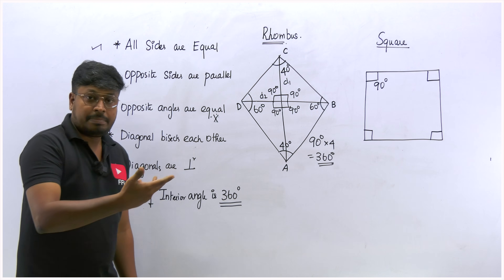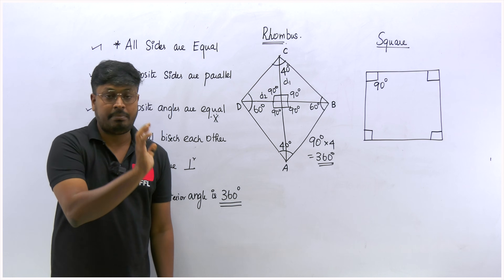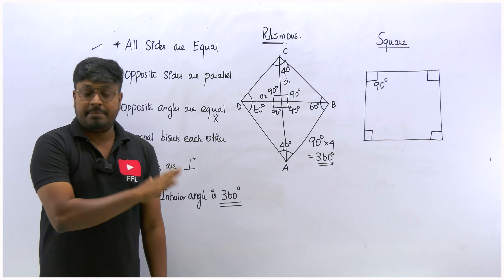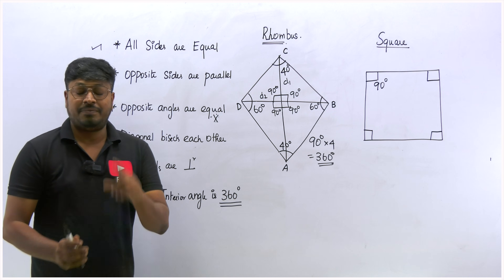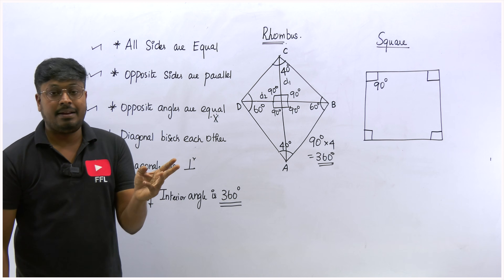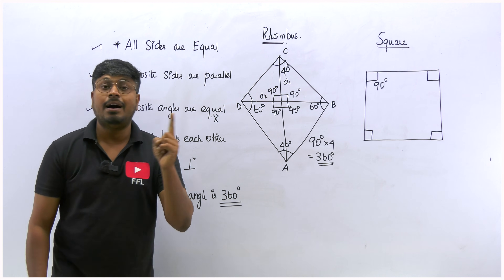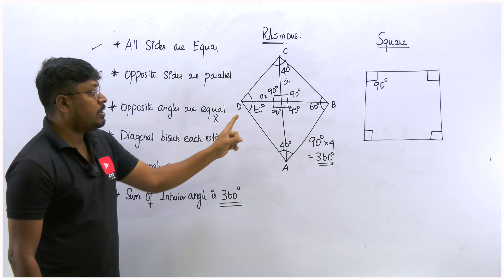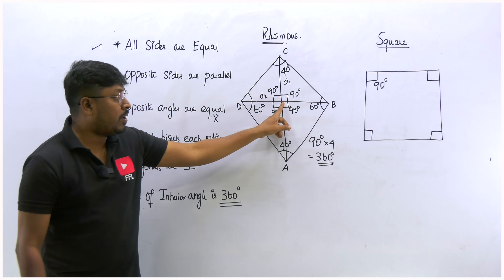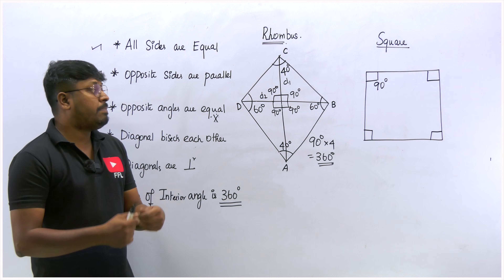There are some other important properties in a rhombus. While solving a question, I will tell you how to apply those properties there. Because without knowing a number, you will feel confused if you learn all those properties initially. Remember that the important properties are: all sides are equal, opposite sides are parallel, diagonals are perpendicular, opposite angles are always equal, and the sum of interior angles at the diagonal bisect point equals 360 degrees.